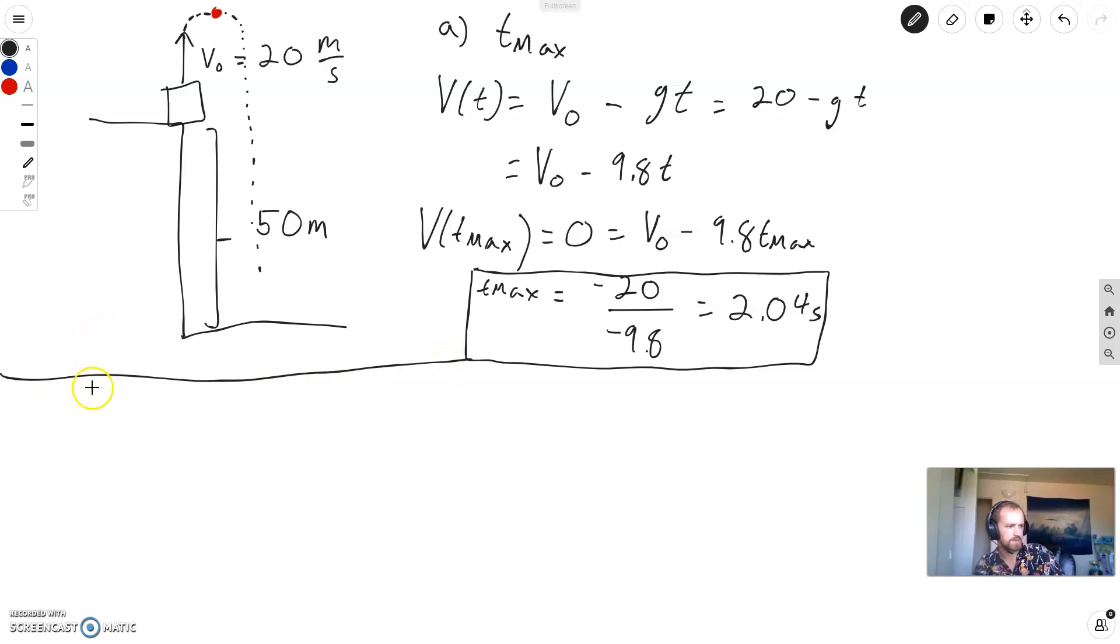Okay, so now part B says the maximum height. Maximum height above the rooftop. So why don't I set my origin? Remember, origin you can put wherever you want. The origin is just the reference point for your map, right? It's basically what do you want to call x equals zero. So I'm going to put my origin at the rooftop. So now, let's say I want to express the position of this thing as a function of time. Okay, in this case, my x direction is going like this.